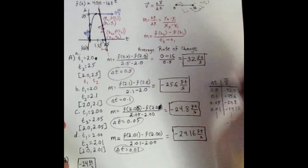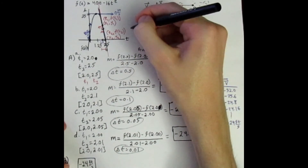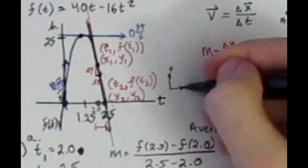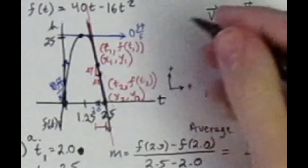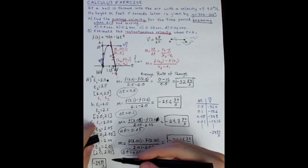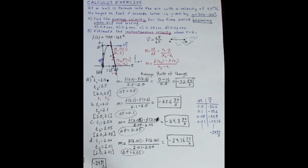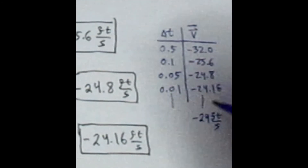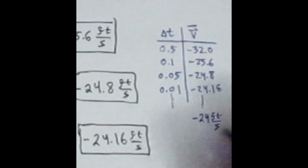The negative sign simply means the ball is going in the downward direction. In physics, we set up which direction is positive and which is negative — making right and up positive, and down and left negative. At t equals 2.0, the ball is going in the negative direction, meaning it's coming back down to the ground. The number we're getting close to as we get infinitely close to 2.0 is the limit.